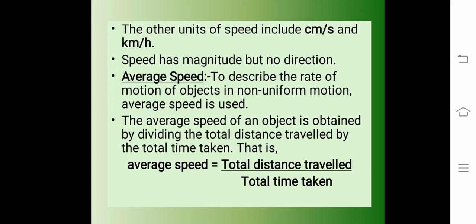Speed has magnitude but no direction. The speed of an object need not be constant — in most cases, objects will be in non-uniform motion. Therefore, we describe the rate of motion of such objects in terms of their average speed. The average speed of an object is obtained by dividing the total distance travelled by the total time taken. That is, average speed equals total distance travelled divided by total time taken.